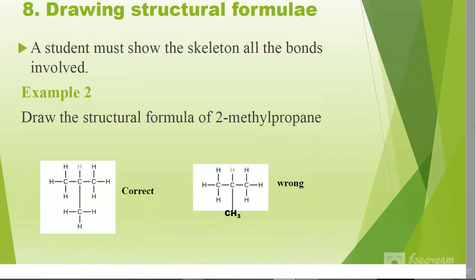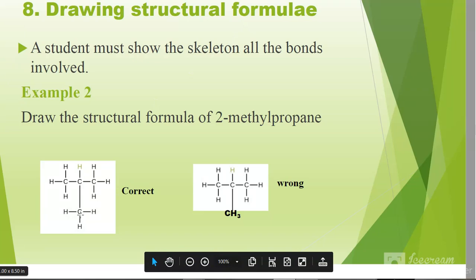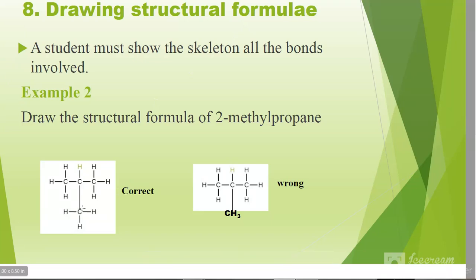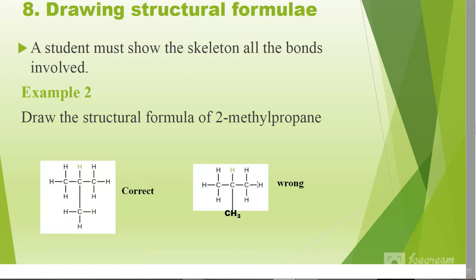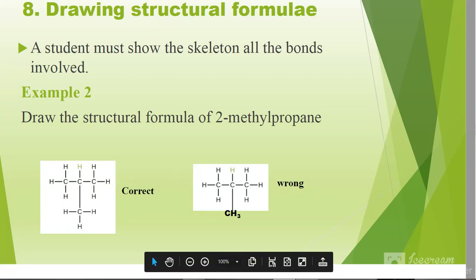Drawing of structural formulas: a student must show the skeleton of all the bonds involved. The first one is correct. Here, this alkyl group, the methyl group, should be written as in part A or the first one. The second one, if you write like this, it is wrong. It is considered wrong. For 2-methylpropane, this is wrong and the first one is right. Avoid those mistakes.